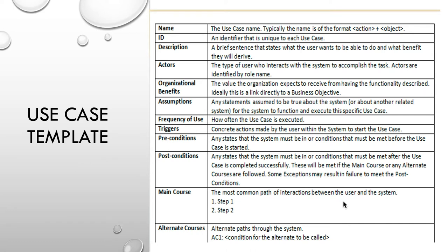Here is a template I found on the web. It starts off with the name of the use case, an identifier, a brief description, and the actors — who are the actors that interact with and benefit from this use case. This template also includes organizational benefits, assumptions, and frequency of use — though I probably wouldn't add frequency of use into my use case document. There are also triggers, which I wouldn't worry too much about either.